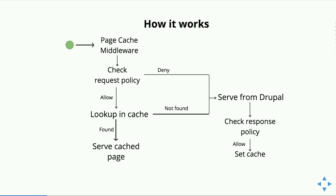The first thing you face are what's called request and response policies. These are pluggable policies you can implement yourself, but Drupal provides its own defaults. The page cache middleware first checks request policies — if any one of them denies retrieval from cache, you won't get the page from cache. If all allow it, the page is looked up in anonymous page cache. If it denies, it goes to Drupal to regenerate the page.